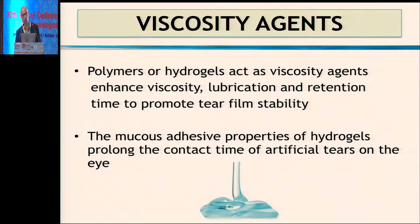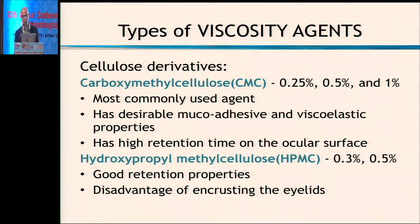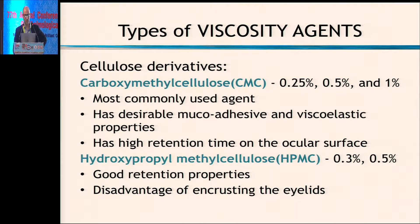The mucus adhesive properties of hydrogels prolong contact time of artificial tears on the eye. Cellulose derivatives are the most popular and common ones. CMC is available as 0.25%, 0.5%, and 1% — it's the most common lubricant and has muco-adhesive and viscoelastic properties and high retention time. Companies are no longer promoting it as much because it has come under price control, so they are going after other molecules like PEG. HPMC was very popular in the past but is now going out of use as well.